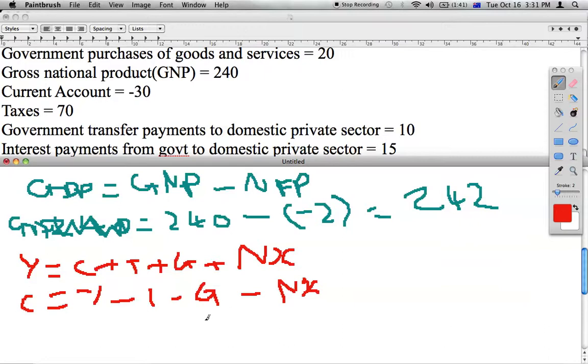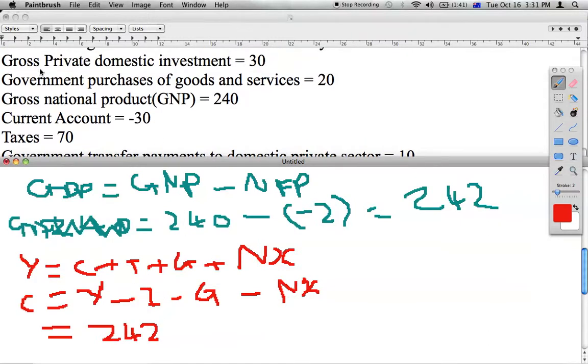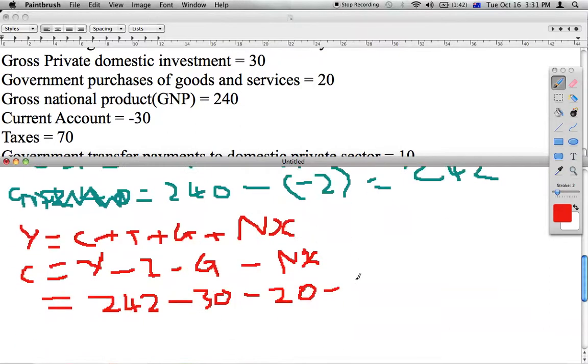Alright, so now we can fill in all the variables. So Y being GDP or national income, which we figured out to be 242. I standing for investment - look in the data, gross private domestic investment is 30, so minus 30. G standing for government spending on goods and services, which is 20. And net exports, we figured out to be minus 28. Put that in brackets at the end. So on the calculator, equals C equals 220.